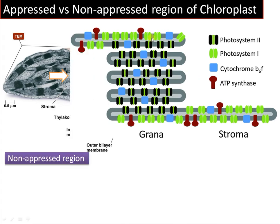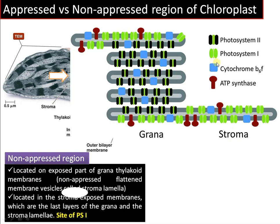The non-appressed region is a region of the granum that is exposed to the stromal side — it can be called the outer layers of the granum — and it is the site of Photosystem I. Photosystem I is located on the non-appressed region of the granum.